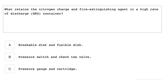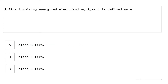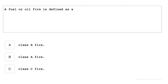What retains the nitrogen charge and fire extinguishing agent in a high rate of discharge container? A breakable disc and fusible disc. A fire involving energized electrical equipment is defined as a class C fire. A fuel or oil fire is defined as a class B fire.